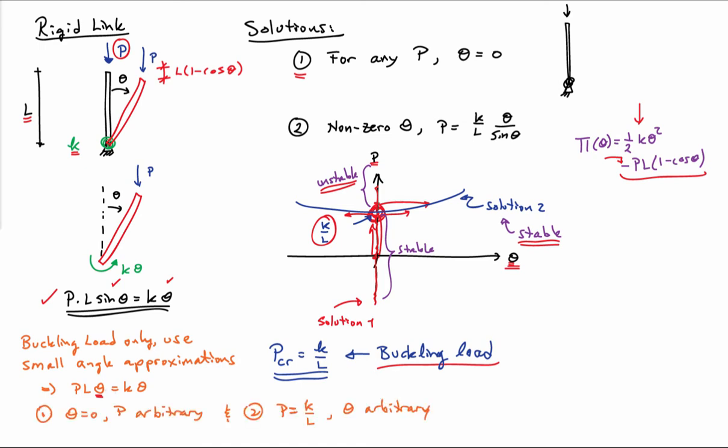Solution two would be P is equal to K over L, and theta being arbitrary. So when you do the small angle approximation, you don't quite get a full solution, but you do find out what the critical value is, and then you find out that you can have arbitrary motion of the system. And that's really what you're worried about. In this case, arbitrary is a proxy for just simply large values of deflection.